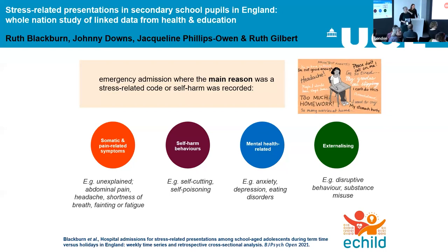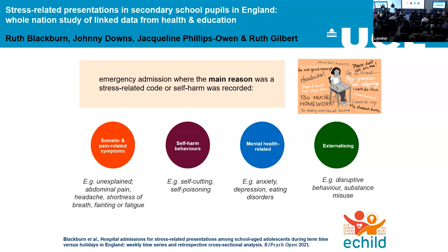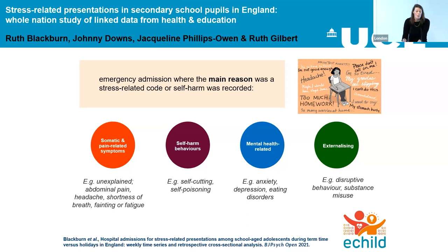Question: What ethnic background is highly affected, and what age group? For this study, 11 to 17-year-olds. We didn't find many differences by ethnic background. There are problems with the way ethnicity is recorded in hospital episode statistics data and in the National Pupils Database, and we didn't cross-validate across those two datasets for that. Our early findings were that there weren't huge differences across different ethnic groups.